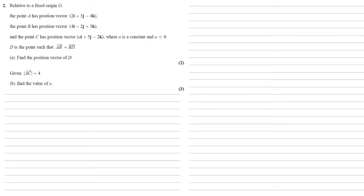We're also told that D is the point such that vector AB equals vector BD. So we want to find the position vector of D.